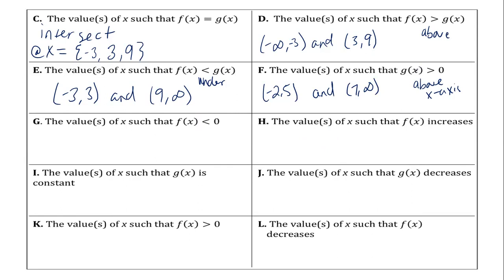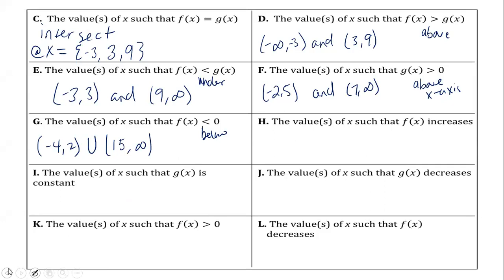So if greater than zero means above the x-axis, less than zero means below. So now we're looking when f of x is below the x-axis. Negative four to positive two, and from five to seven. Also remember we have an x-intercept at 15 — so even though we don't see it, 15 happens and then we continue. It's negative four to two and then 15 to infinity.